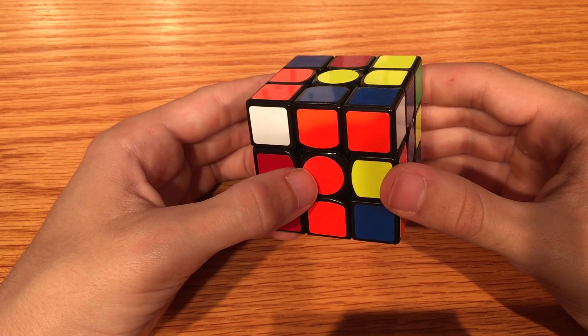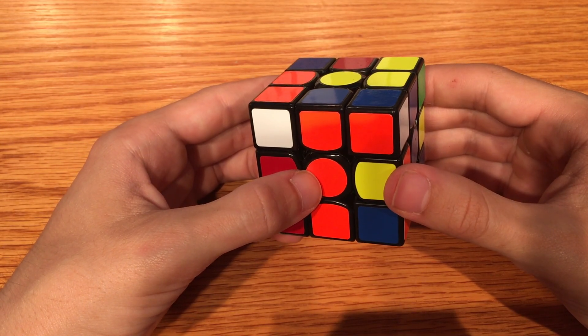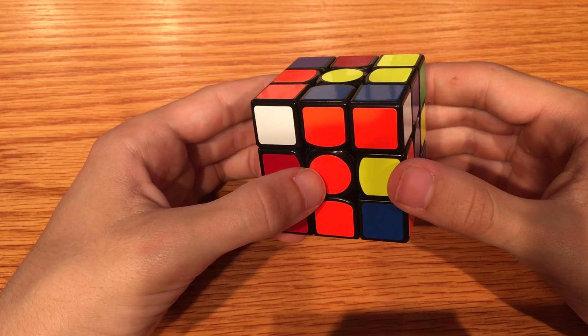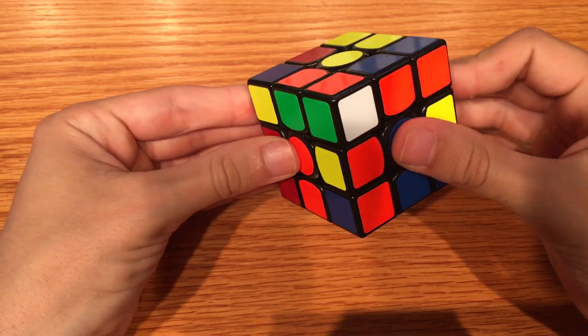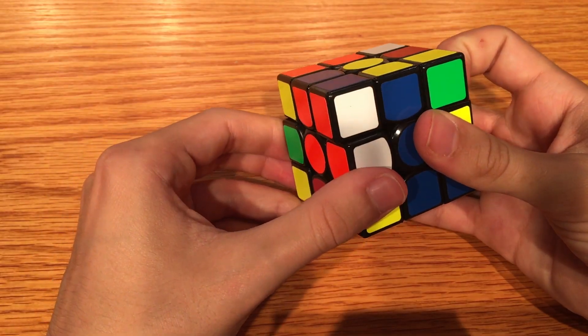Then we line up and insert. For now, insertion will be exactly the same every time. Just use the last four moves of the lateral algorithm. Here's the hole. We go across, open, in, close.